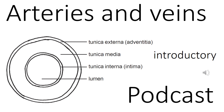An artery or an arterial vessel is any vessel which is carrying blood away from the heart. Likewise, the veins are a complex system of tubes, and just like the arteries, the veins are carrying blood, but the veins carry blood towards the heart. So the veins are a complicated network of tubes carrying blood from the periphery of the body, or sometimes from the lungs, back to the heart. Arteries carry blood away from the heart; veins carry blood towards the heart.